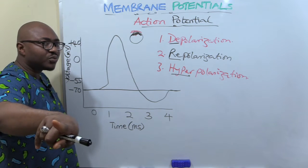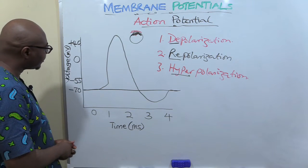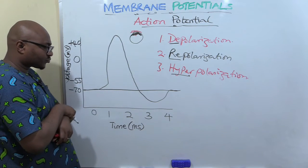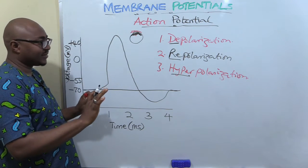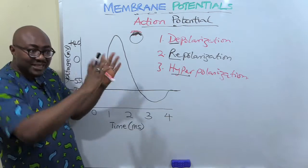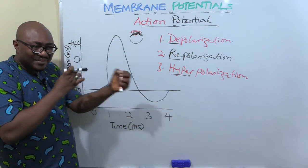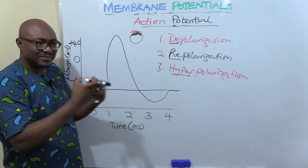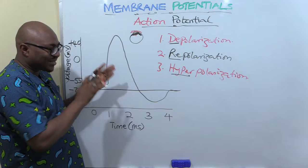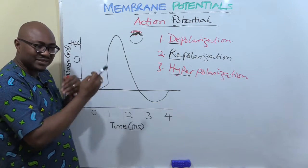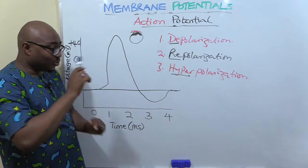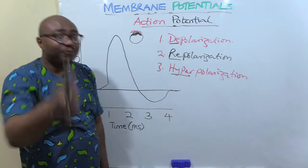Now I want to enter the ionic basis of these three stages, because generation of electricity is a result of chemicals — chemical energy is being converted to electrical energy. We're going to look at the behavior of the ions and what movement of ions is causing these stages.